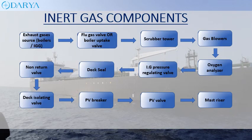The basic inert gas system components are: exhaust gas source (boilers or IGG), flue gas valve or boiler uptakes valve, scrubber tower, gas blower, oxygen analyzer, IG pressure regulating valve, deck seal, non-return valves, deck isolating valve, PV breaker, PV valve, and mast riser.